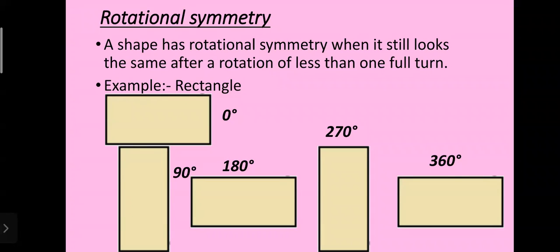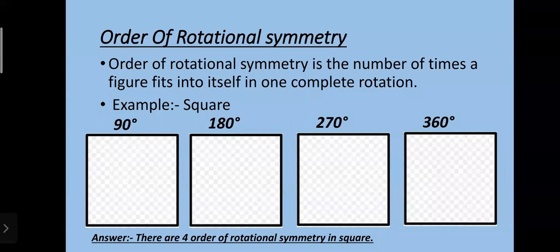At 180 degrees and 360 degrees it looks the same as the original figure at 0 degrees, and it looks the same under less than one full turn — 360 degrees. So this figure has rotational symmetry. Now let's see what is the order of rotational symmetry. The order of rotational symmetry is the number of times a figure fits into itself in one complete rotation.